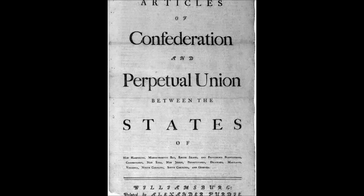In 1776, we officially declared to Britain that we were going to be a new and independent nation. We wrote the Declaration of Independence and sent a copy to King George III. From our perspective, we were no longer colonies — we are now a nation and need to form a new national government. The Second Continental Congress proposed that all the colonies draft new constitutions as states. They started creating the Articles of Confederation in 1777, and it wasn't officially ratified until 1781. It is a wartime document.